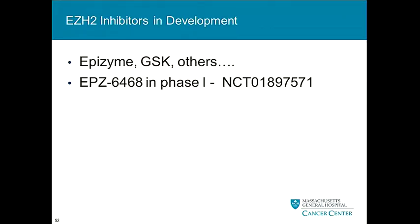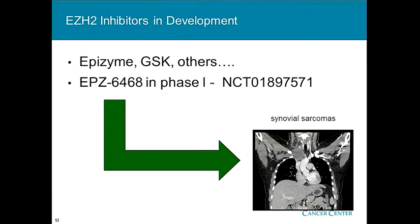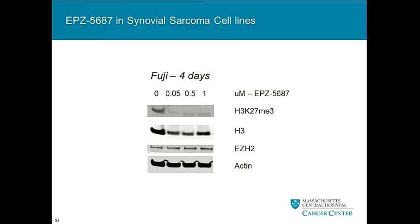EPZ-6438 is in phase one now — only open in France. We were lobbying hard to get this drug into the United States, but they felt we needed more preclinical evidence, which makes sense from a drug development standpoint. Nevertheless, we set up a material transfer agreement with Epizyme and obtained one of their other EZH2 inhibitors, EPZ-5687, to treat our cell lines. Using the Fuji cell line, we saw rapid inhibition of the hypermethylation mark even at low doses.